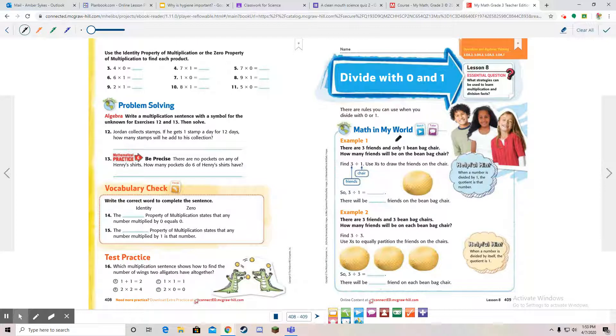There are three friends and only one beanbag chair. How many friends would be on the beanbag chair? Find three friends and one chair. Use the x's to draw the friends in the chair. It's three divided by one. We have three friends but only one chair, so they're all going to have to be on one chair. Three divided by one equals three. There will be three friends in the beanbag chair. Hopefully it's a big beanbag chair.